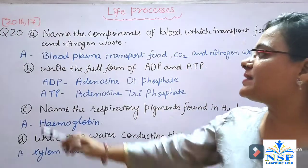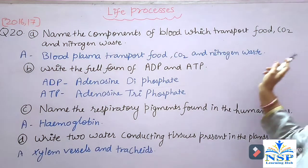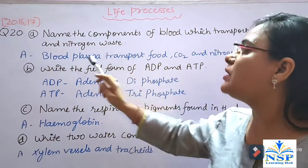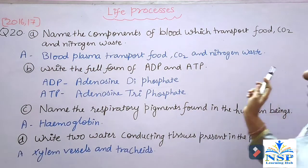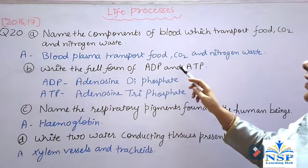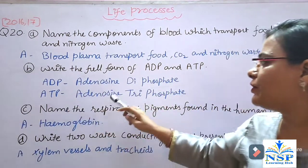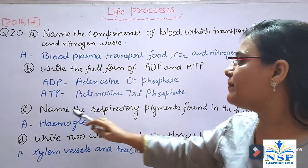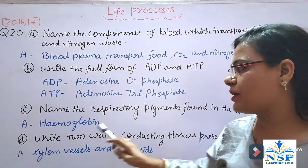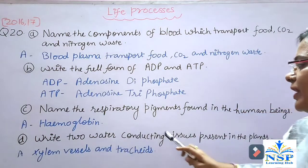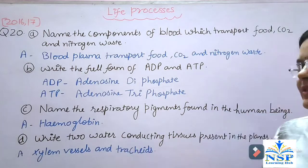Next important question: Name the component of blood that transports food, carbon dioxide, and nitrogenous waste. Blood plasma transports food, carbon dioxide, and nitrogenous waste. Write the full form of ADP and ATP: ADP — adenosine diphosphate; ATP — adenosine triphosphate. Name the respiratory pigment found in human beings — it is hemoglobin. Name the conducting tissues present in plants — these are xylem vessels and phloem.